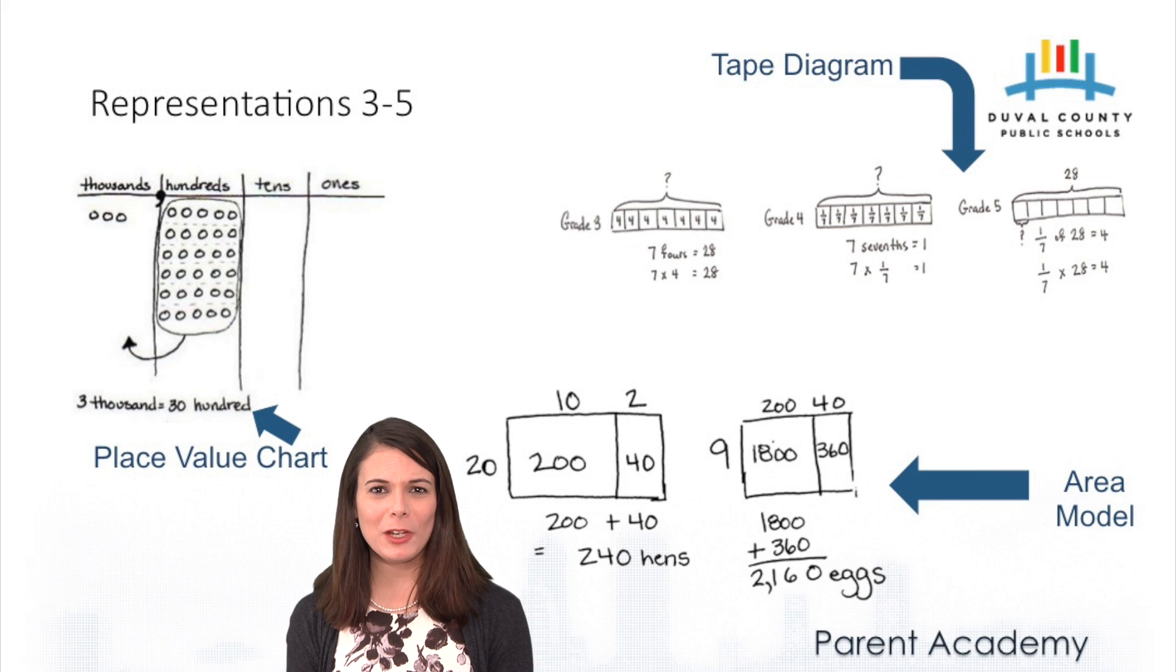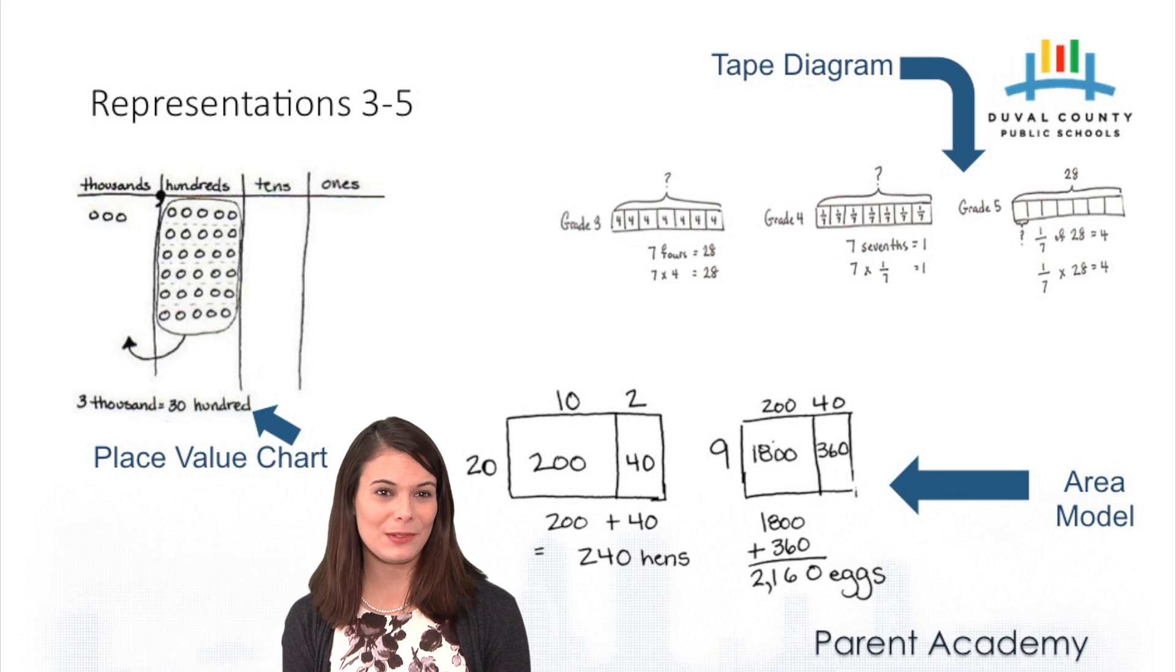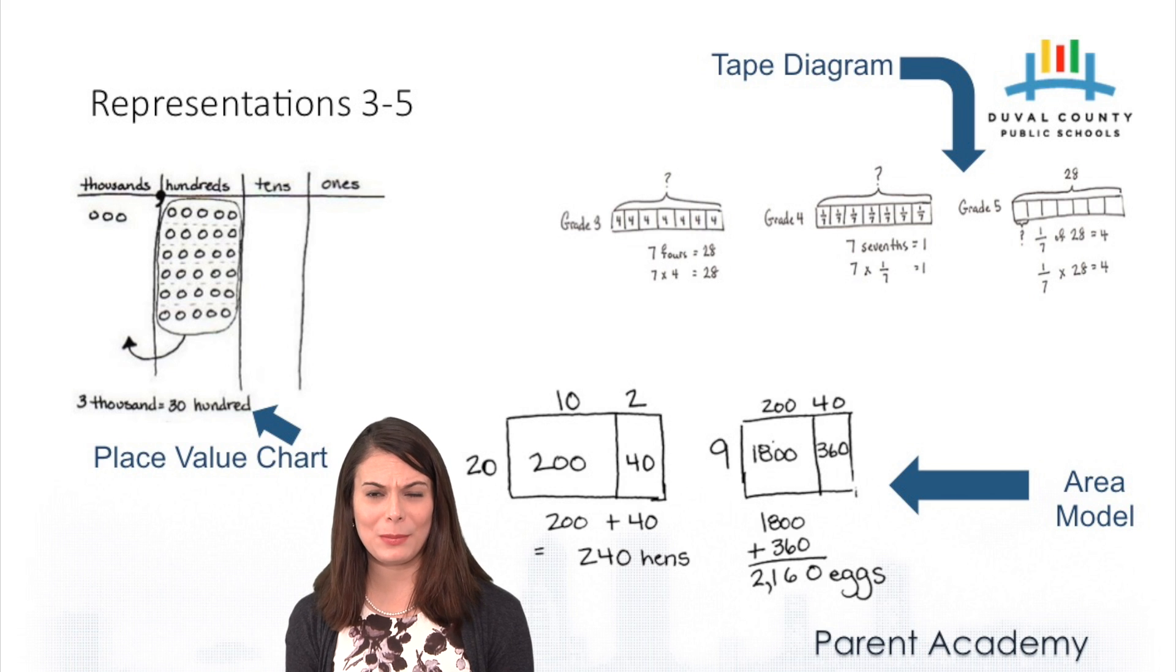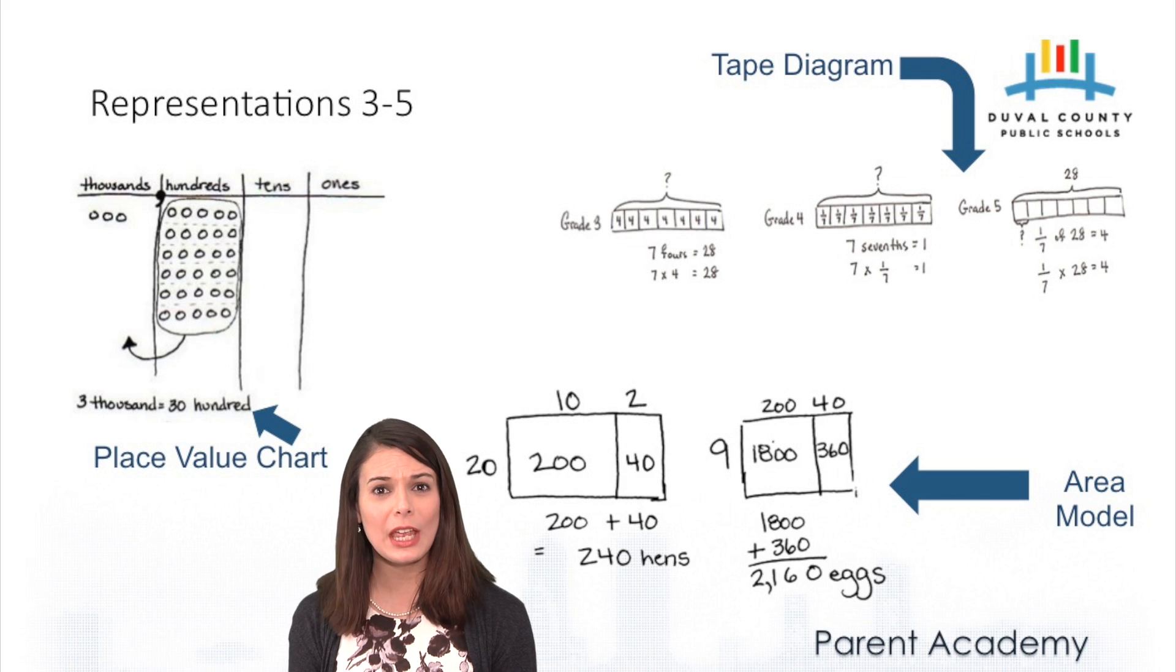On your screen, you'll see three of the representations your child will work with frequently in grades three through five. First, you see your place value chart. This is used to demonstrate to students how ten ones can be regrouped into one ten, how ten tens can be regrouped into one hundred, and how ten hundreds can be regrouped into a thousand. You'll see another example of the area model that Beth showed us. And finally, you'll see the tape diagram, which carries from the primary grades. This model can be used for all four functions.